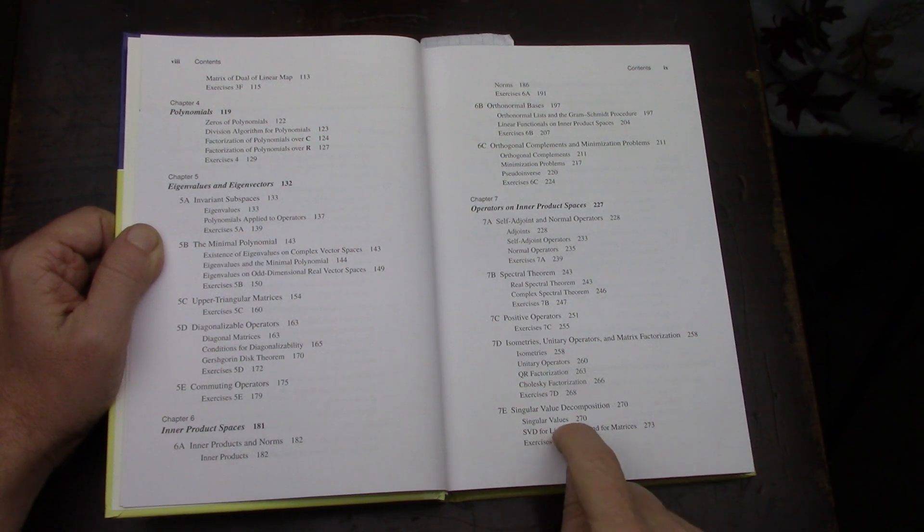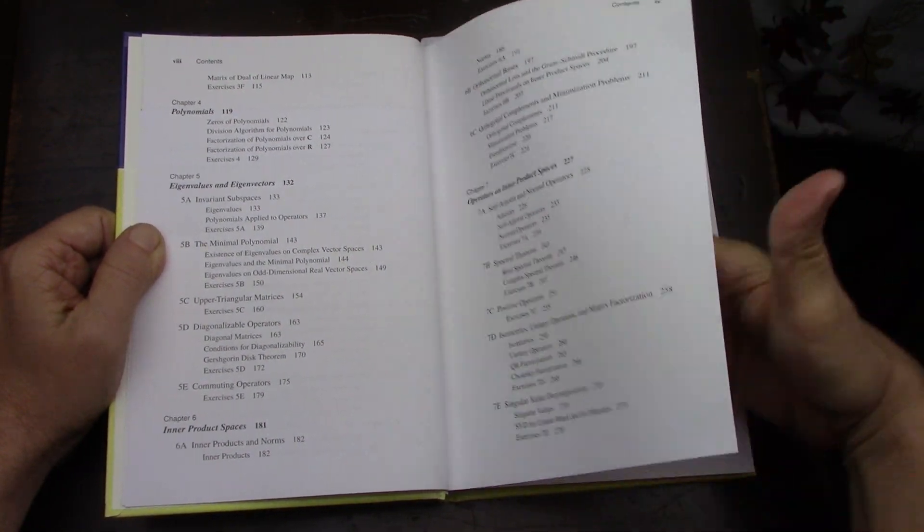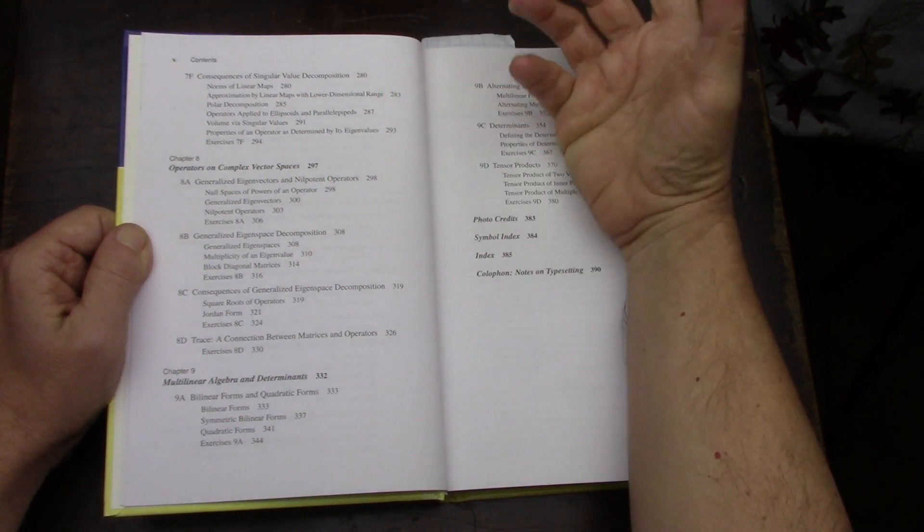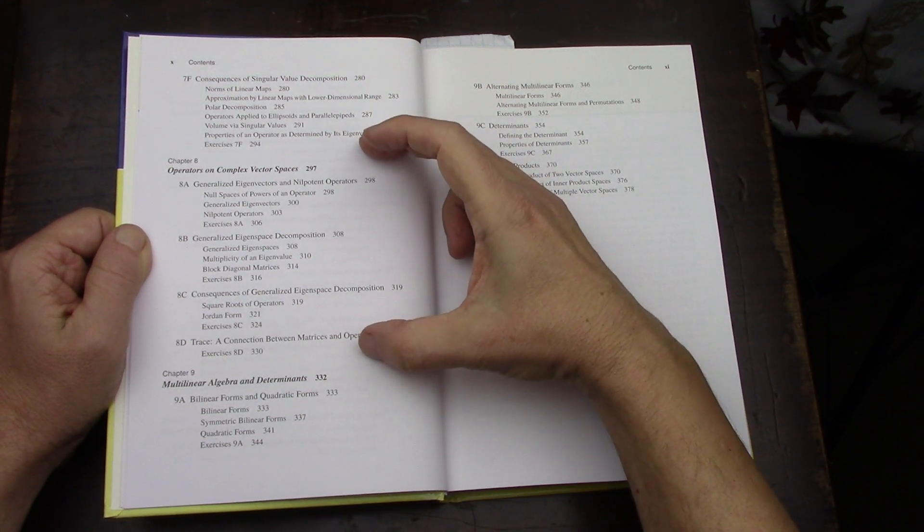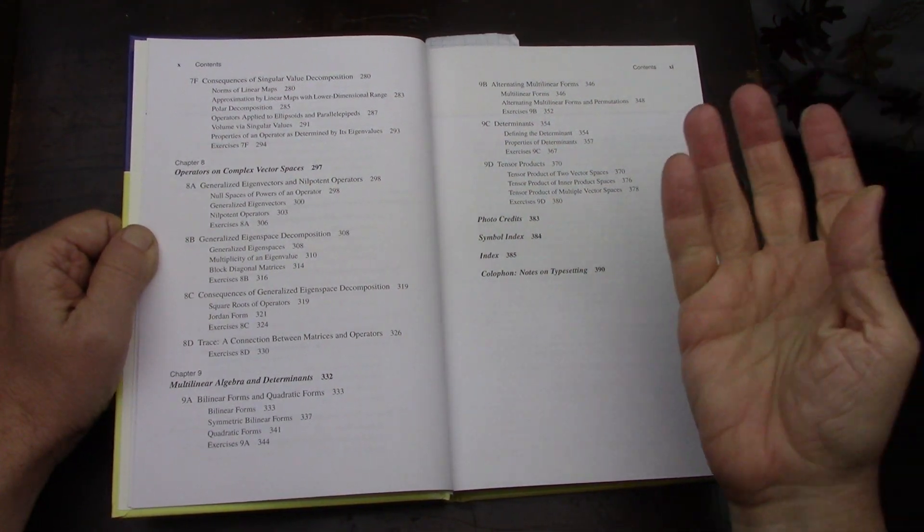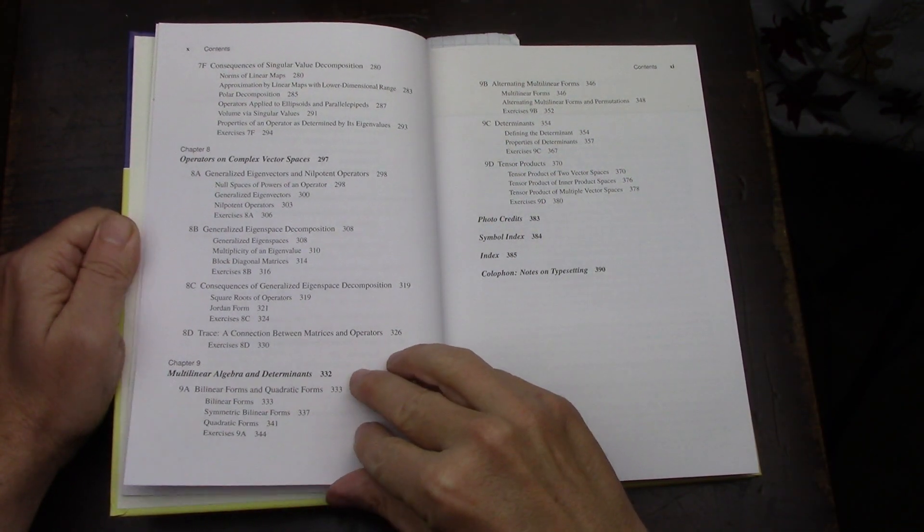Then operators on inner product spaces, the spectral theorem, and SVD which used to be a smaller subsection but now it's a full section - it's been upgraded. Even more about SVD, which are great additions. Then complex vector spaces, and the grand finale is multilinear algebra, which I really look forward to studying.